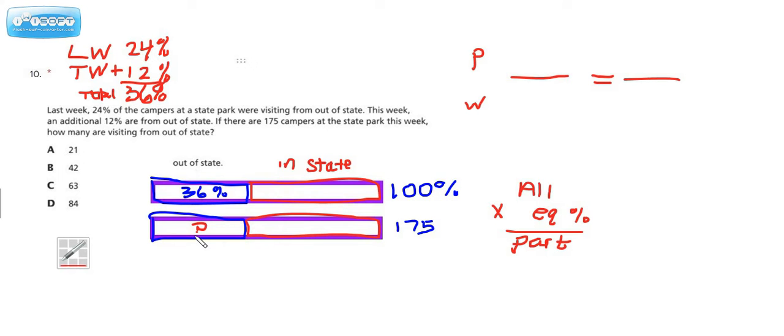Now, the number that they want is they want this number. They want the number of folks that are from out of state. So let's read this again. If there are 175 campers at the state park this week, how many are visiting from out of state? So that would imply that 175 would be the all of it number, and they want to know this number right here.